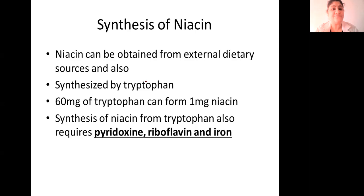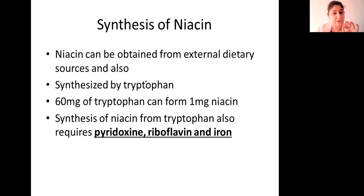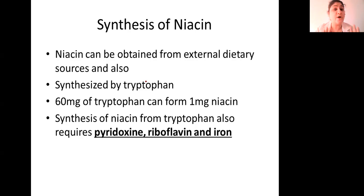Synthesis of niacin from tryptophan also requires participation of other vitamins in the form of their coenzymes — this is a very important point. It means you require pyridoxin, riboflavin, as well as iron. Even if a person has good amounts of tryptophan, they won't be able to synthesize niacin if they have a deficiency of pyridoxin. So apart from pyridoxin deficiency disorders, the patient will also have pellagra-like symptoms.